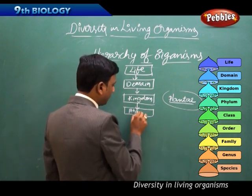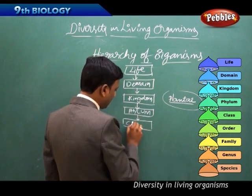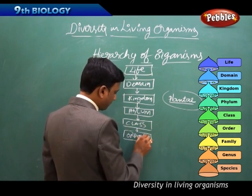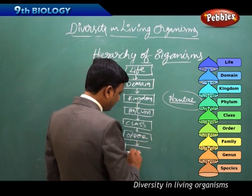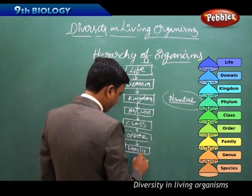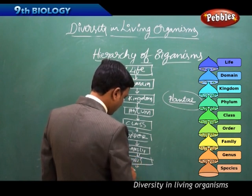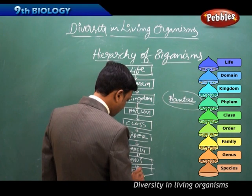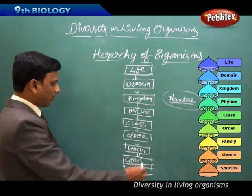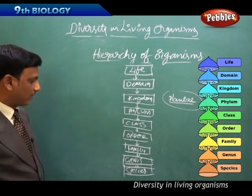Below kingdom is the phylum. Below phylum, class. Below class, order. Below order, family. Below family, genus. And below genus, species. This is the hierarchy of organisms.